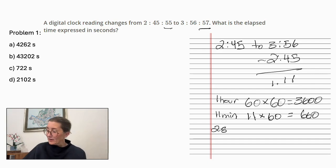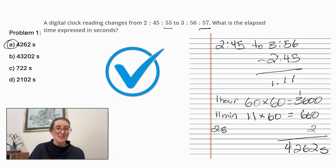And finally, our 2 seconds. So we have 3,600 plus 660 plus 2, which equals 4,262 seconds, which is A. So we can say A with confidence is our answer.